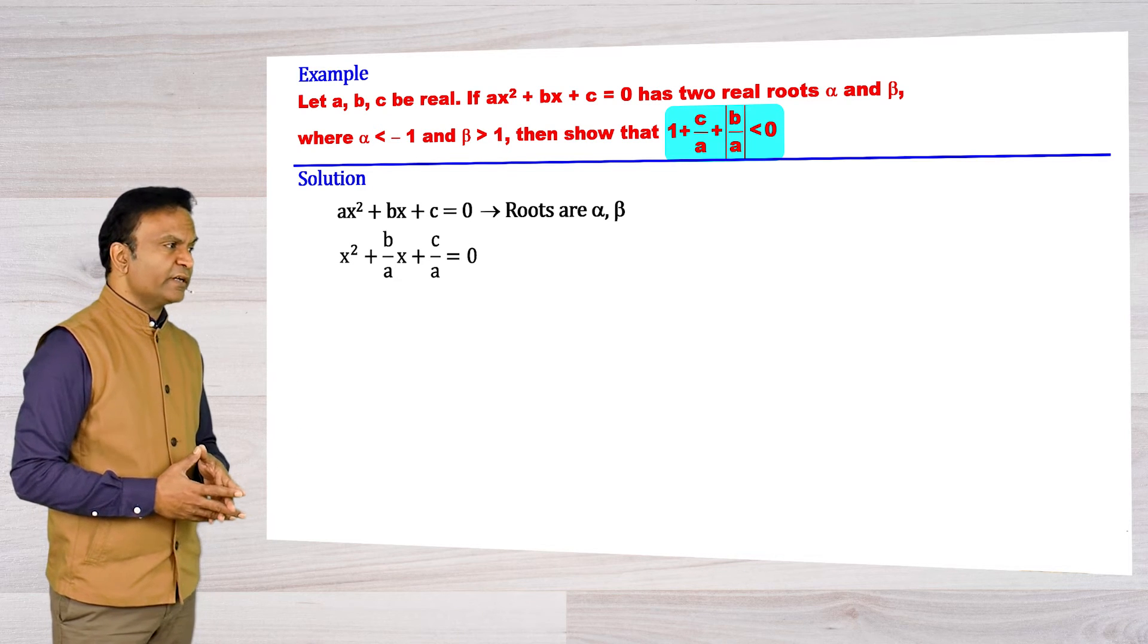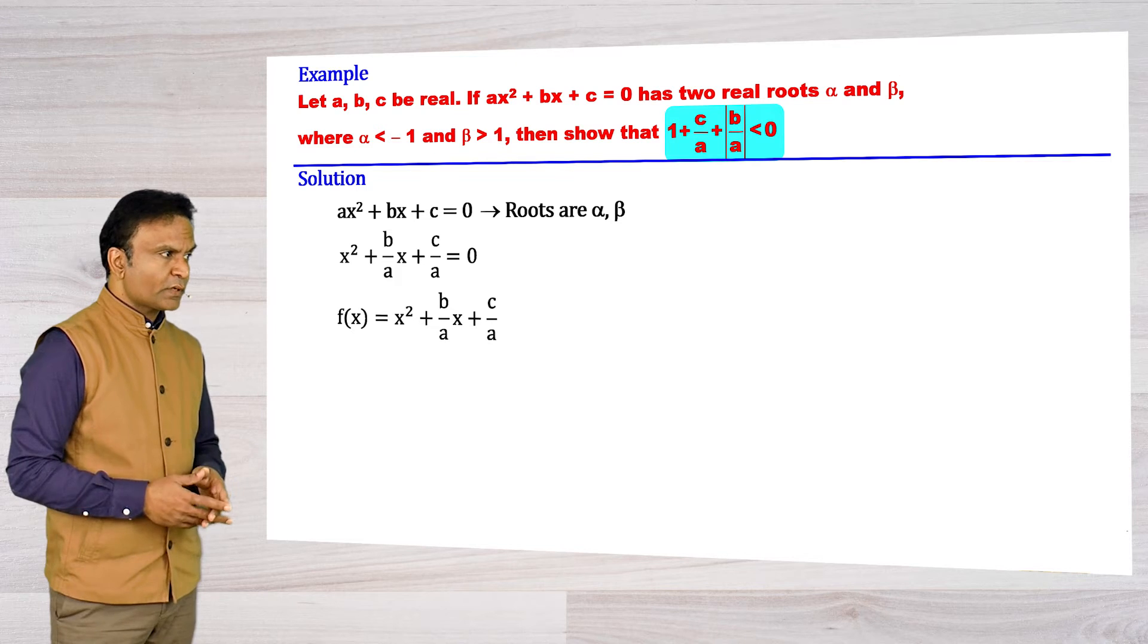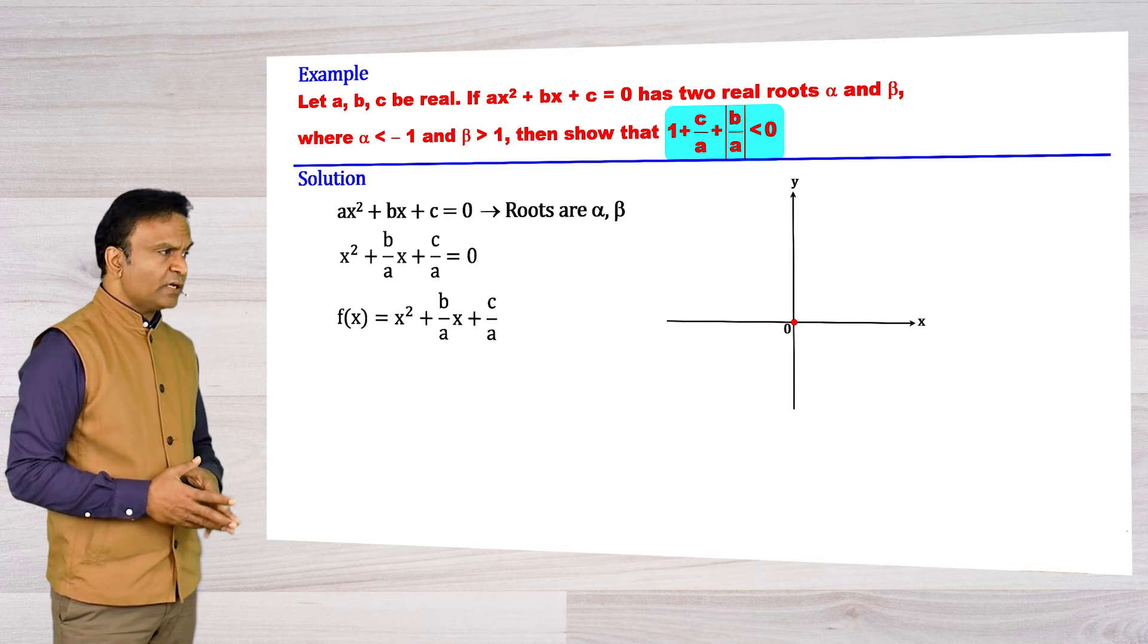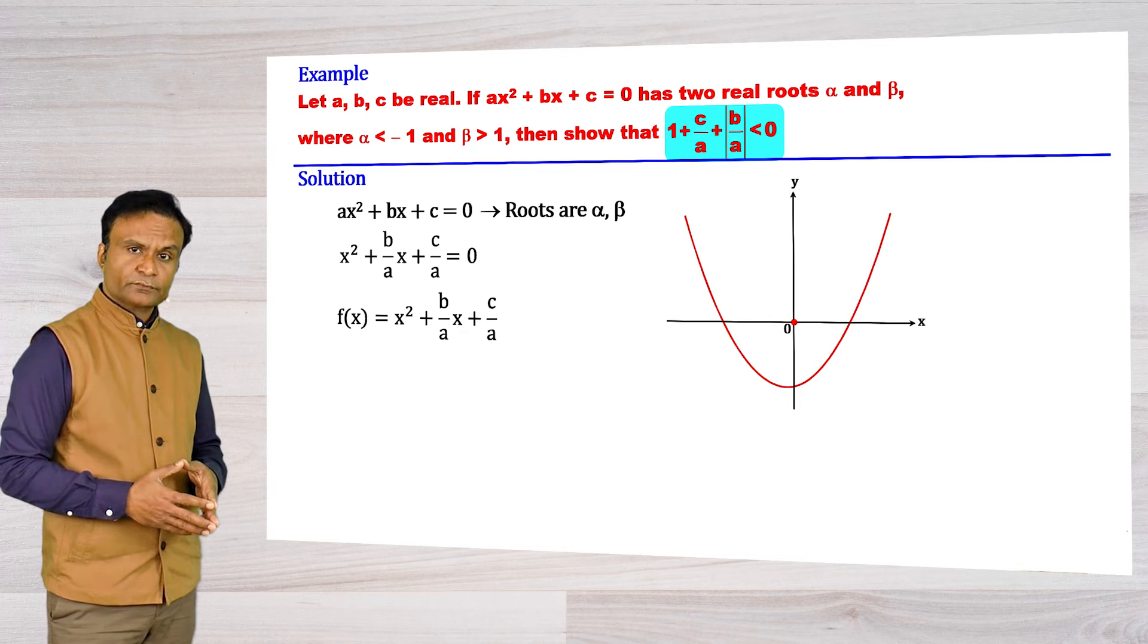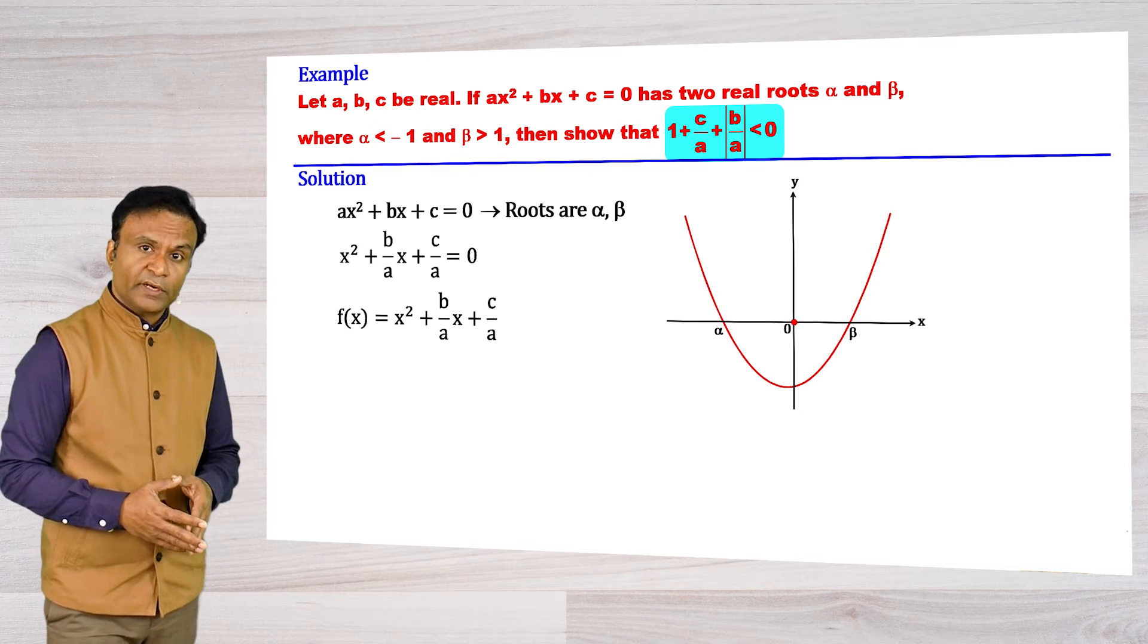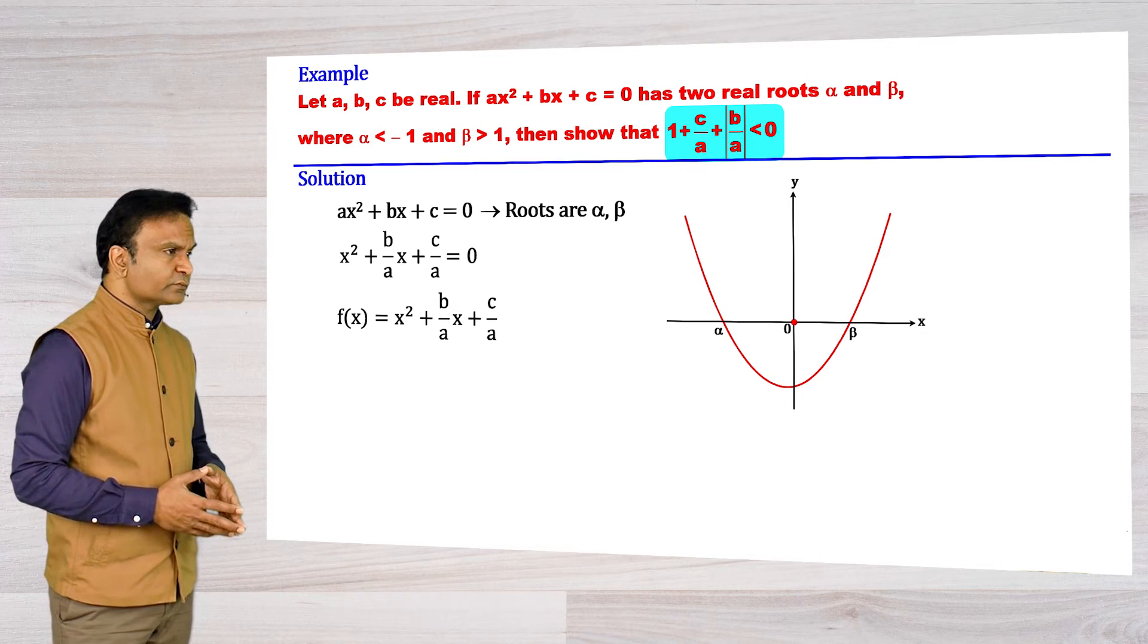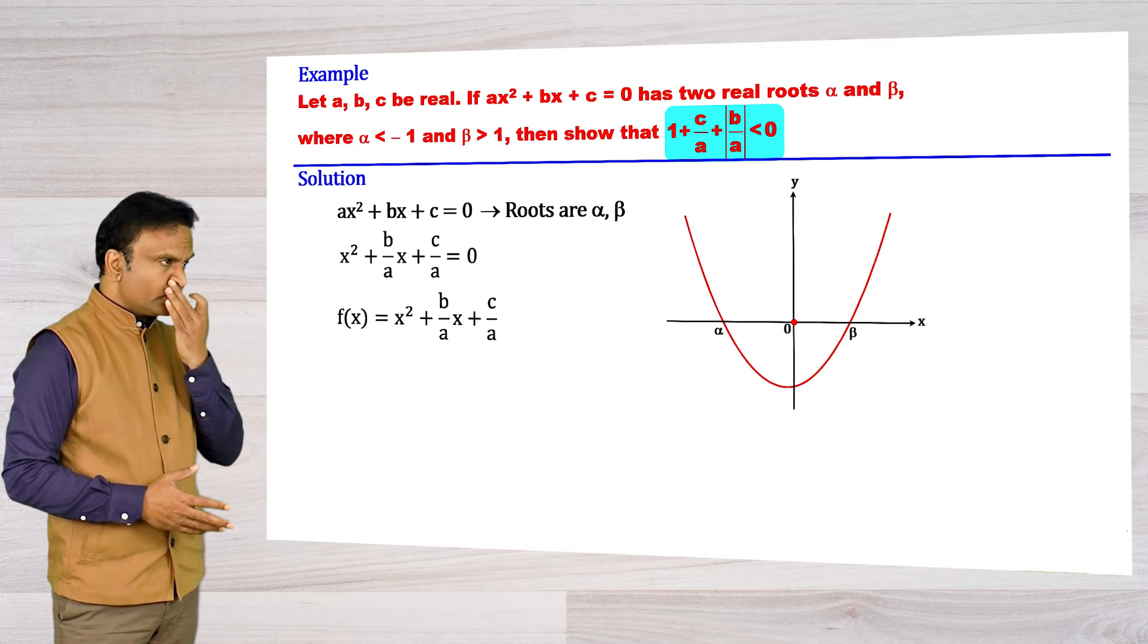The corresponding quadratic function is this. Let us draw the graph of this function. Start with the coefficient of a which is 1, so the graph is concave upward. Also the equation has roots α and β, so the graph must intersect the x-axis at two distinct points α and β. Here we have the graph with α and β roots.